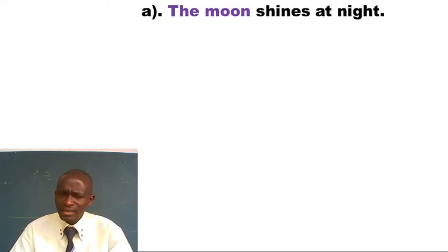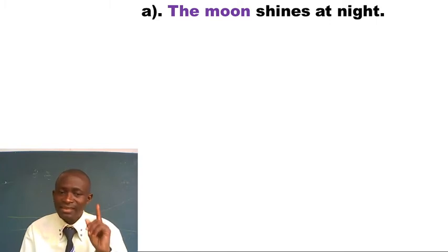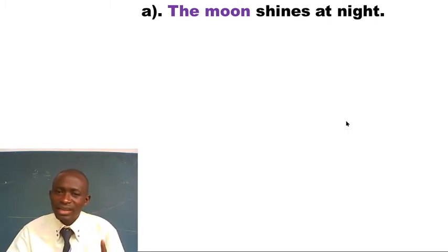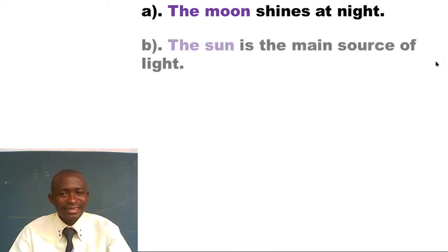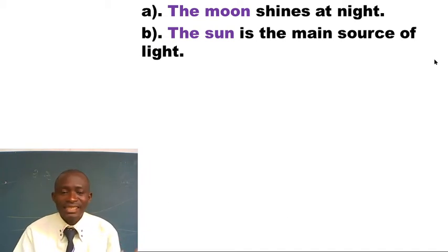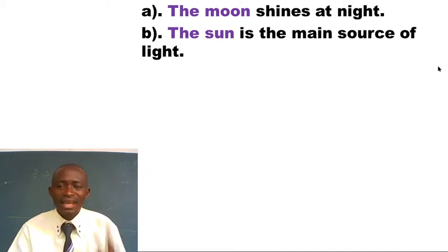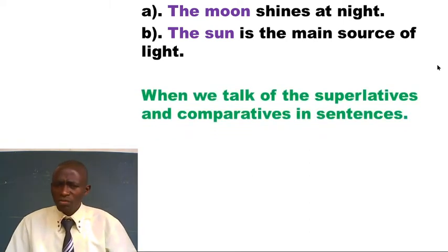Look at the sentence constructed using this area of understanding: 'The moon shines at night.' I said 'the moon' — I have introduced the only thing, the moon, with article THE. Look at the next: 'The sun is the main source of light.' That is it, friends.